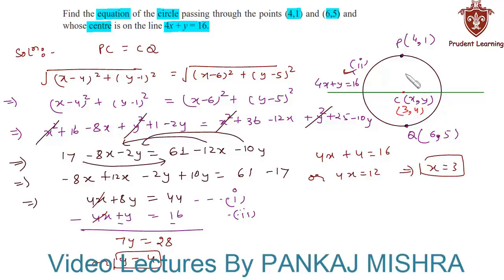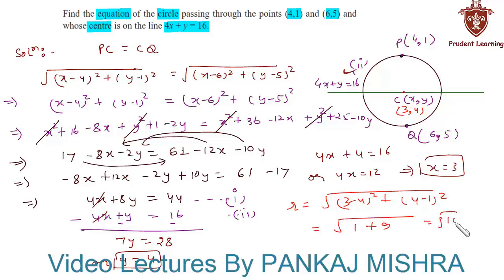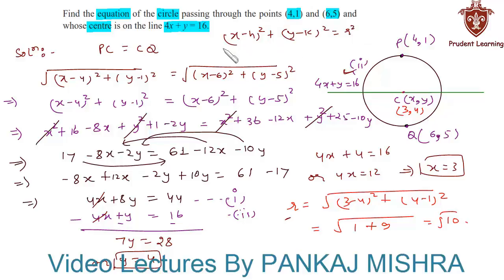Now we can find the radius using the distance formula for PC. We have r equals the square root of (3 minus 4)² plus (4 minus 1)², which equals root 10. Now that we have the radius and coordinates of the center, we substitute into the standard form of a circle: (x minus h)² plus (y minus k)² equals r², where (h, k) are the coordinates of the center.